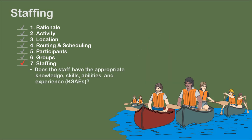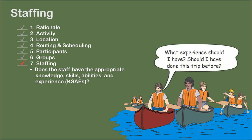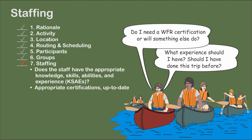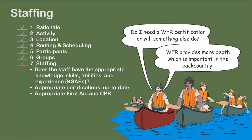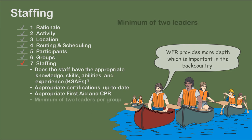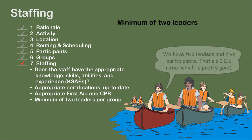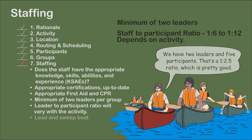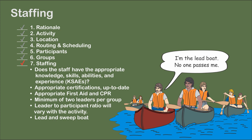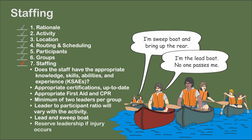The staff needs to have the appropriate knowledge, skills, abilities, and experiences for the activity being conducted. Usually this includes the appropriate certifications recommended or required by the parent organization or the industry in general. Does the staff have the appropriate first aid and CPR certifications? Normally, a minimum of two leaders are required. Leader-to-participant ratios can range from 1 to 6 to 1 to 12, depending on the type of activity. On the trip, one leader can take the lead and the other follows as the sweep; if one instructor is injured, the other can assume the leadership role.